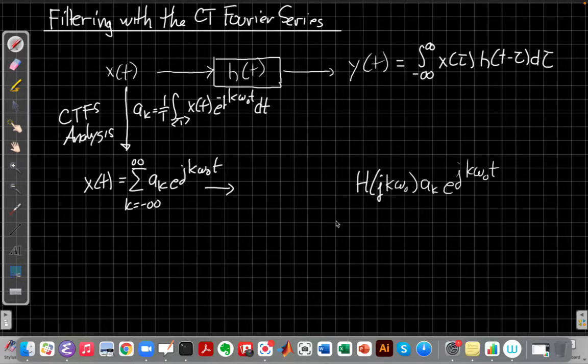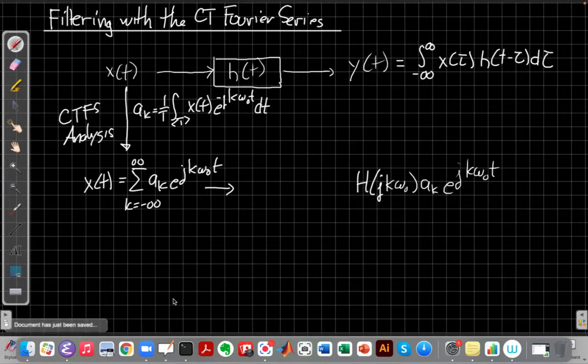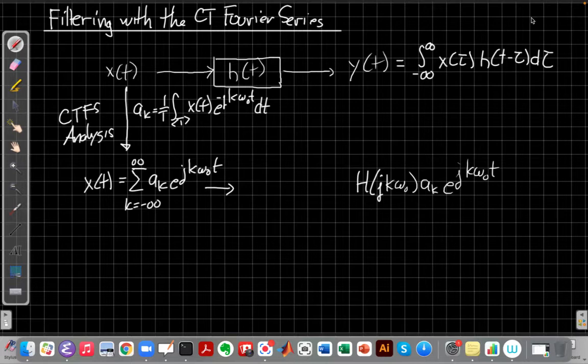We said the general eigenfunction property is we put in e^(st), we get out h(s) times e^(st). And so this here is the s we've chosen.